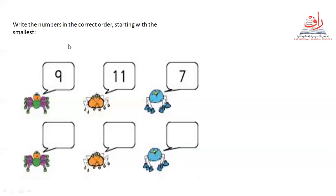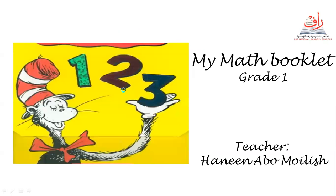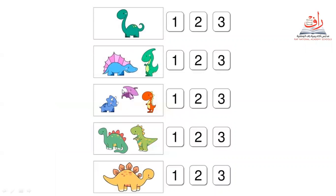Let's open the booklet. Last time — last Thursday — we were talking about adding, like three plus two. I'm going to show you how we find the number. How many dinosaurs do we have in this picture? We have only one. Can we find number one? What is number one? We made a circle. Okay, what about the next picture?